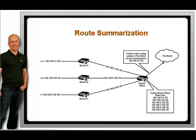The central office router can either send a routing update with all the subnets it knows about listed individually, or it can send a single line in the update that essentially says, send anything that starts with 192.168.0 to me. Both methods work. The issue is one of scalability. No router will ever collapse under the load of advertising six subnets, but make it 6,000 subnets, and it makes a huge difference in performance if you summarize as much as possible.